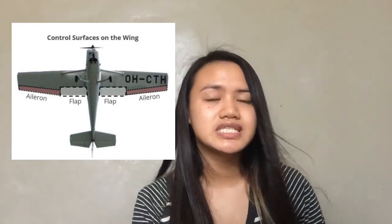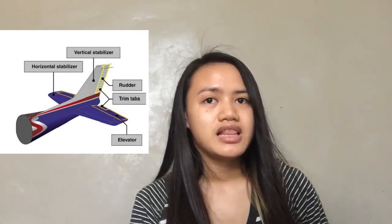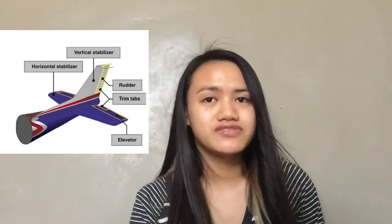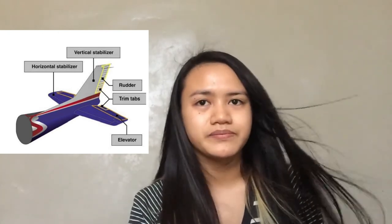The third component is the empennage. It includes the entire tail group and consists of fixed surfaces such as the vertical stabilizer and the horizontal stabilizer. The movable surfaces include the rudder, the elevator, and one or more trim tabs. The rudder is attached to the back of the vertical stabilizer and is used during flight to move the airplane's nose left and right. The elevator is attached to the back of the horizontal stabilizer and is used to move the nose of the airplane up and down during flight. Trim tabs are a small movable portion of the trailing edge of the control surface. These movable trim tabs, controlled from the flight deck, reduce control pressures and may be installed on the ailerons, the rudder, and/or the elevator.